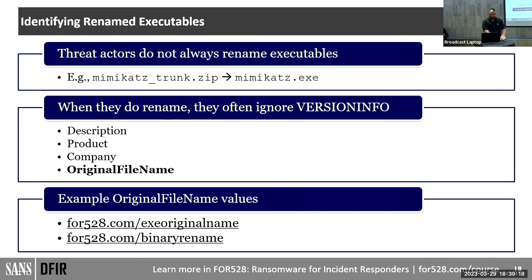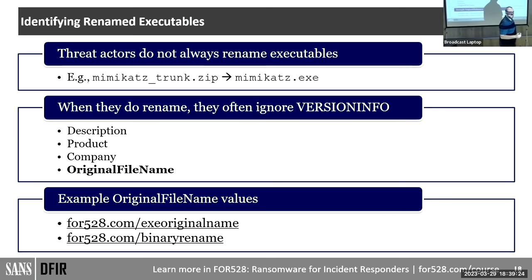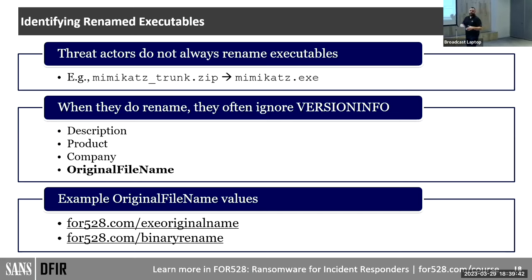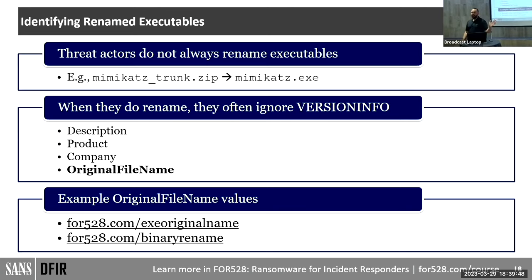Many times these threat actors are not renaming their executables — you'll see mimikatz.exe in your environment. If they do happen to rename them, one thing they never touch is the version info resource — a resource embedded inside the portable executable (.exe or .DLL). It's added at compilation time and they usually never touch it. It has fields like description, product, company, and the important one: original file name.